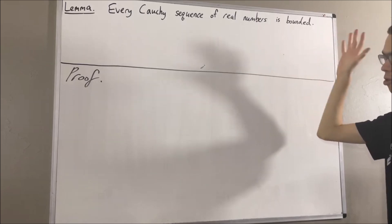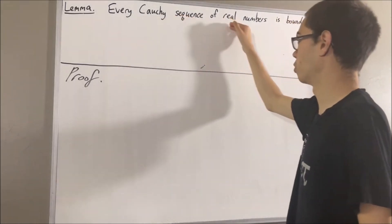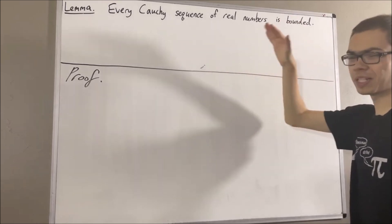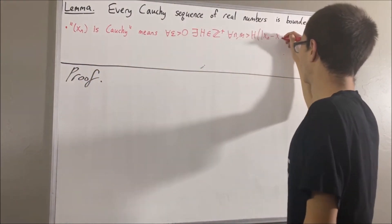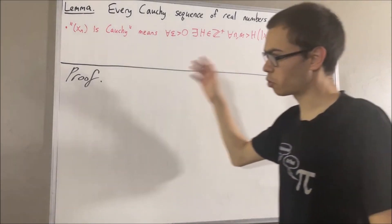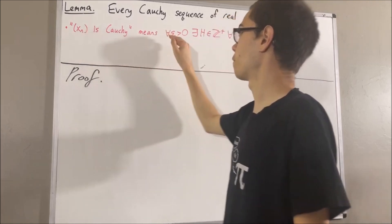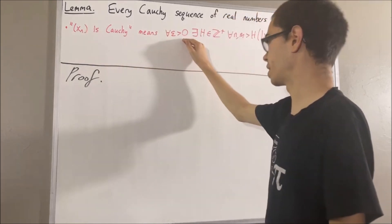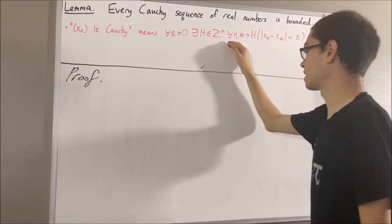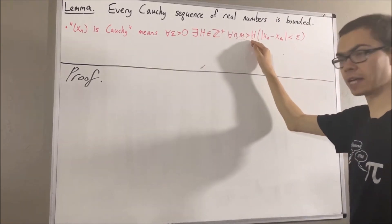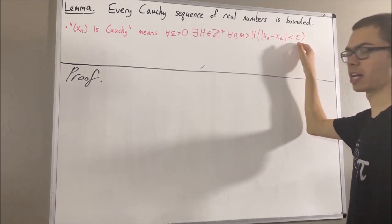First, let's remind ourselves the definition of a Cauchy sequence of real numbers. Given a sequence of real numbers xn, we say that xn is Cauchy if for every epsilon greater than zero there exists a positive integer h such that for all positive integers n and m greater than h, the absolute value of xn minus xm is less than epsilon.